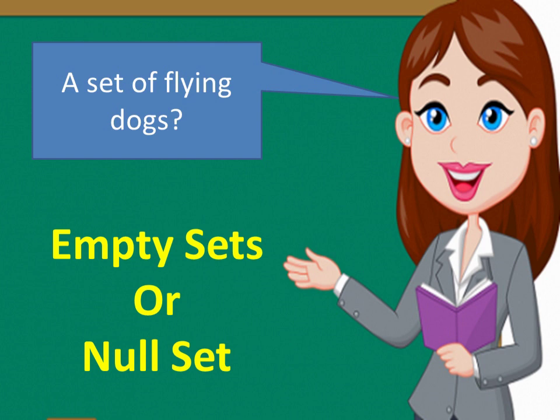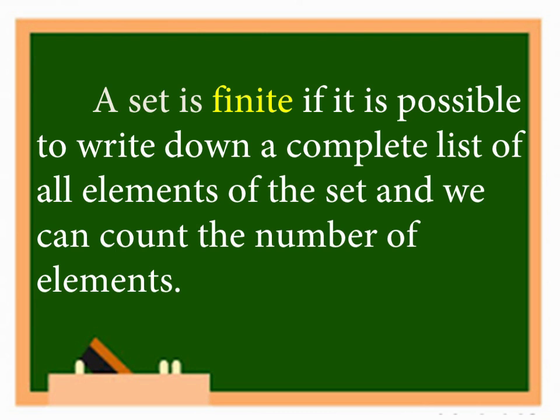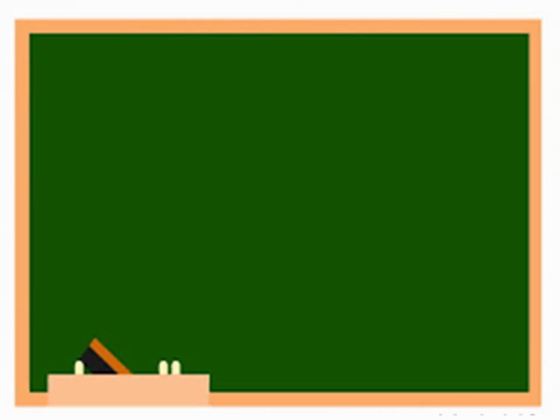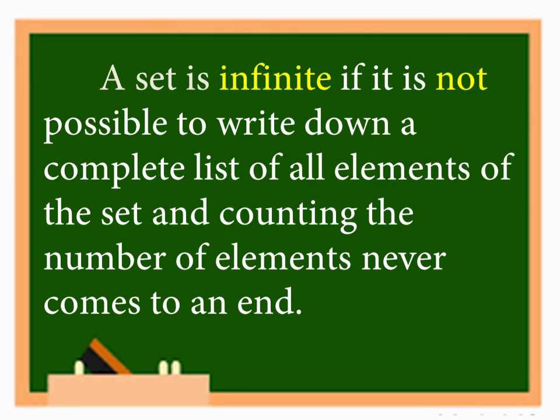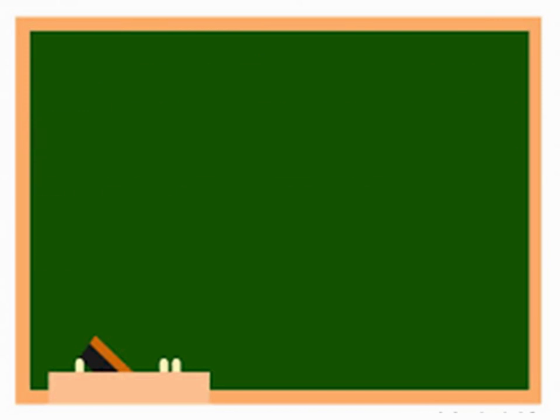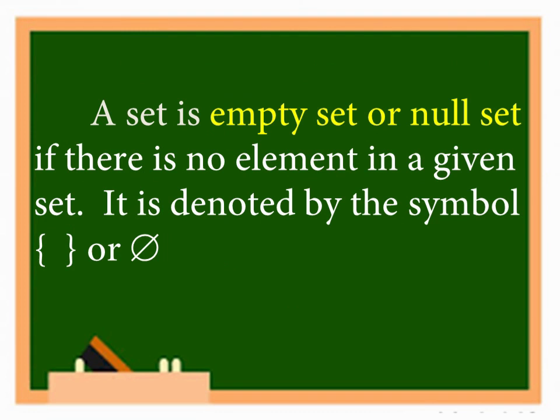Let's do the recap. A set is finite if it is possible to write down a complete list of all elements of the set and we can count the number of elements. A set is infinite if it is not possible to write down a complete list of all elements of the set and counting the number of elements never comes to an end. A set is an empty set or null set if there is no element in the given set. It is denoted by these symbols.